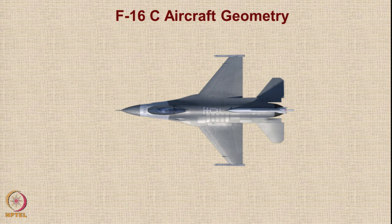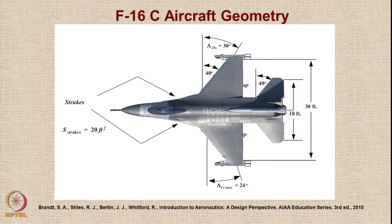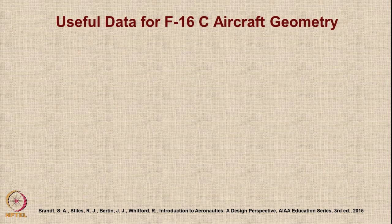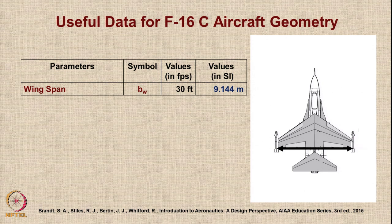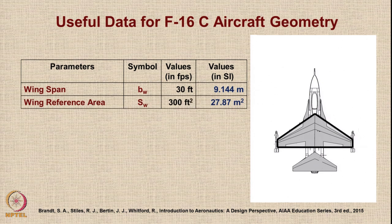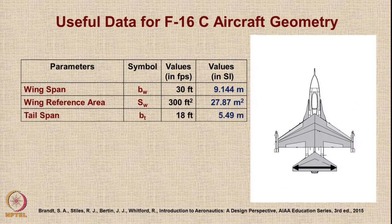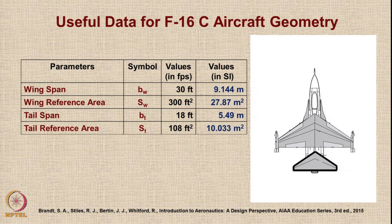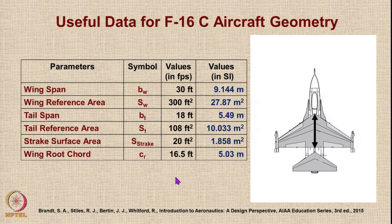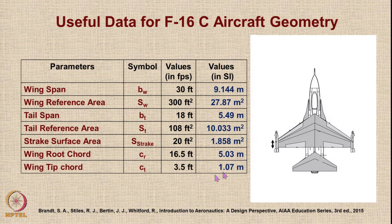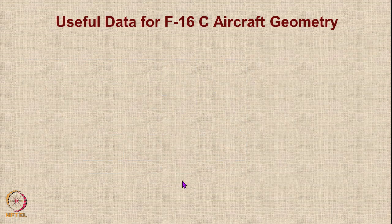Here is the aircraft geometry with values of various parameters. For this aircraft, the wingspan is 30 feet (9.144 meters), wing reference area is 300 square feet (27.87 square meters), tail span is 18 feet. The strake surface area is 20 square feet (1.858 square meters). Root chord at the wing center is 16.5 feet (5.03 meters), tip chord is 3.5 feet (1.07 meters).